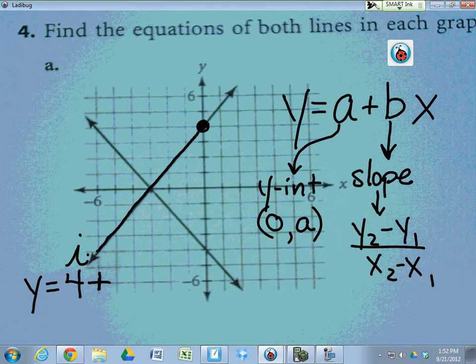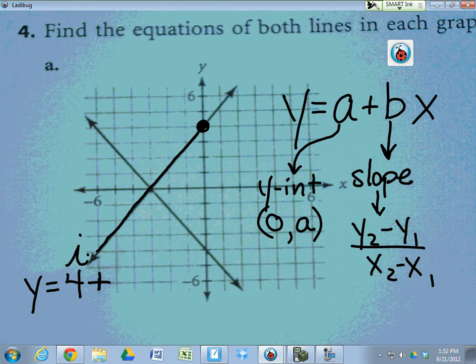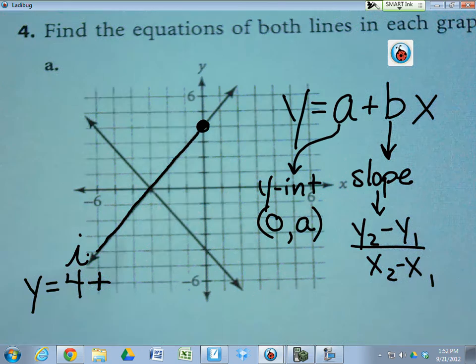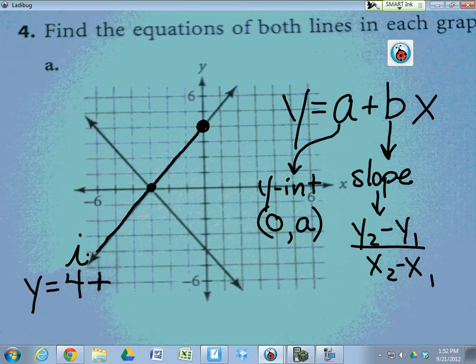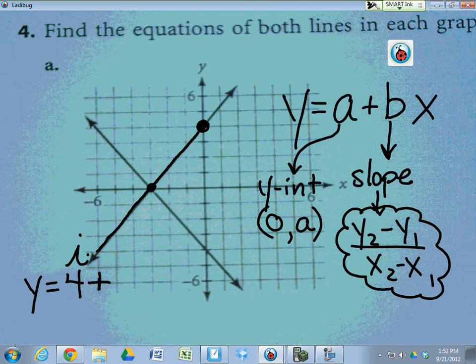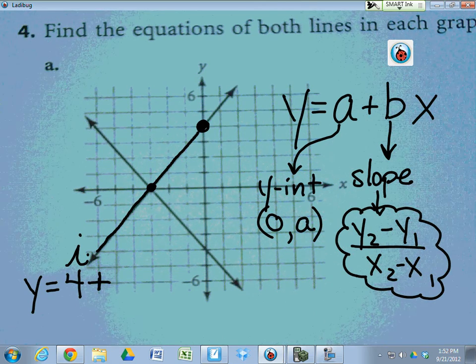Now, the B comes from change in Y over change in X, and you can find that two different ways. You can locate two points on this line and use this formula, or you could just make what's called a slope triangle.